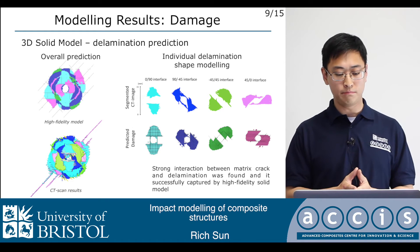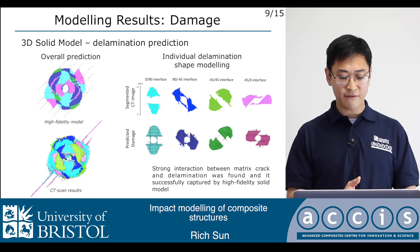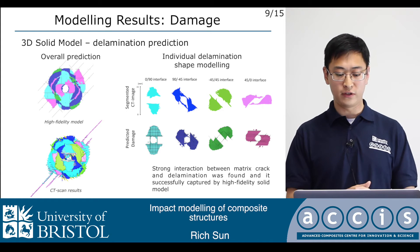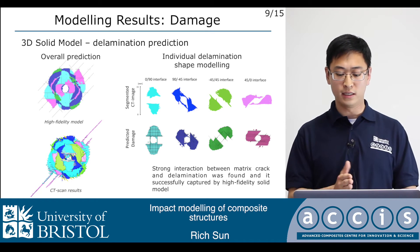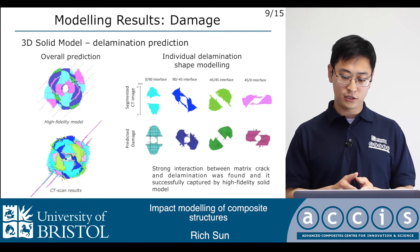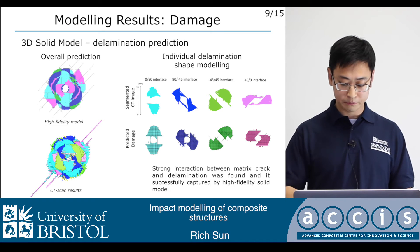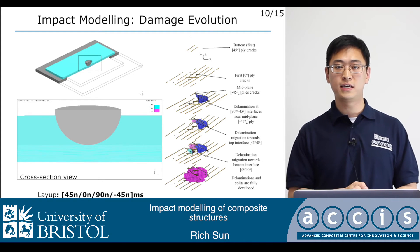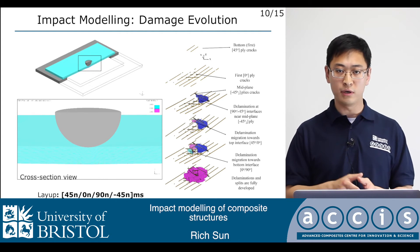This shows modeling results compared against CT-scan images. This 3D high fidelity solid model not only gives a good prediction of the overall shape of delamination and matrix crack, it also captures the strong interaction between matrix crack and delamination. The exact shape of each individual delamination has been captured very well. Because of this highly detailed validation process, we are more confident to predict damage evolution — in other words, what really happens inside the structure and the sequence of damage events.